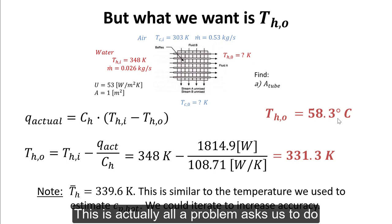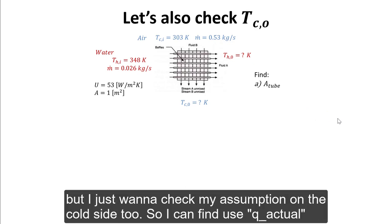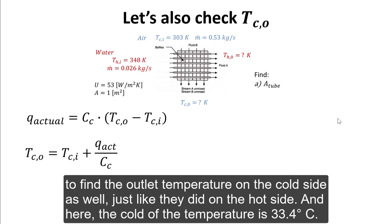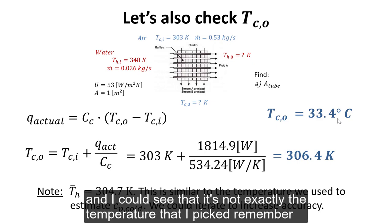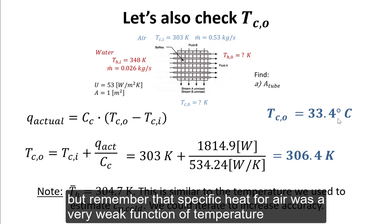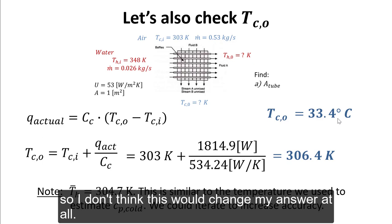This is actually all the problem asks, but I just want to check my assumption on the cold side too. I use Q actual to find the outlet temperature on the cold side just like I did on the hot side, and the cold outlet temperature is 33.4 degrees Celsius. I can check that assumption as well — it's not exactly the temperature I picked, but specific heat for air was a very weak function of temperature, so it wouldn't change my answer at all.